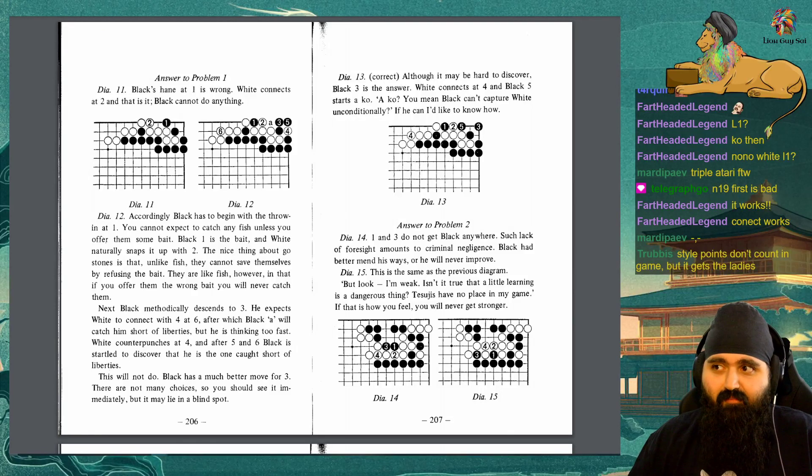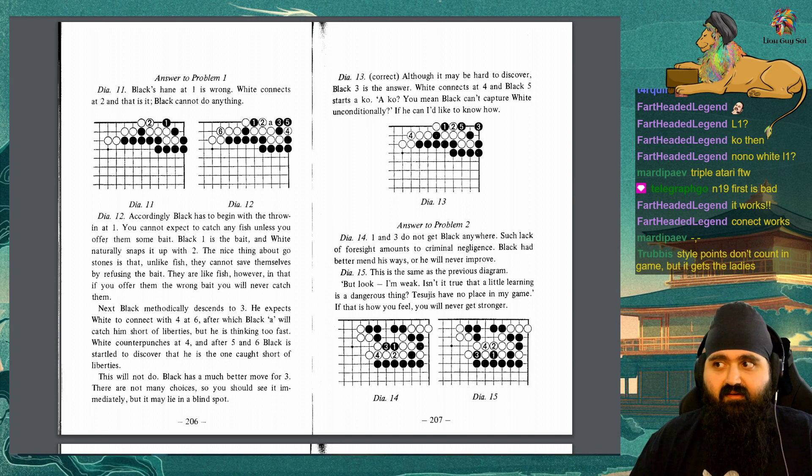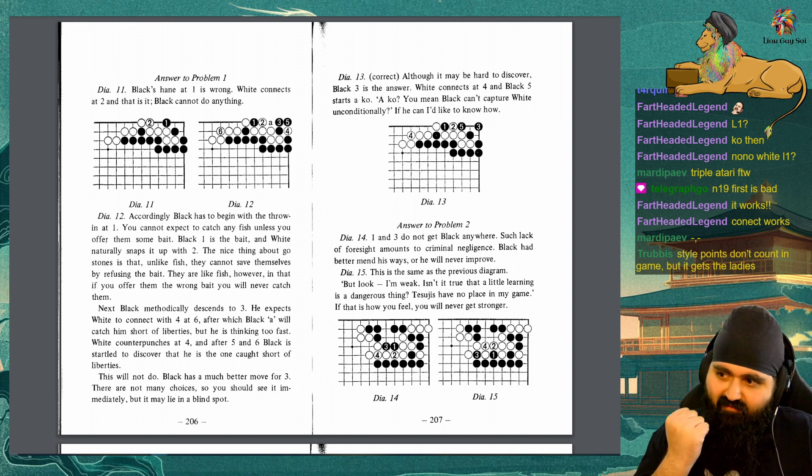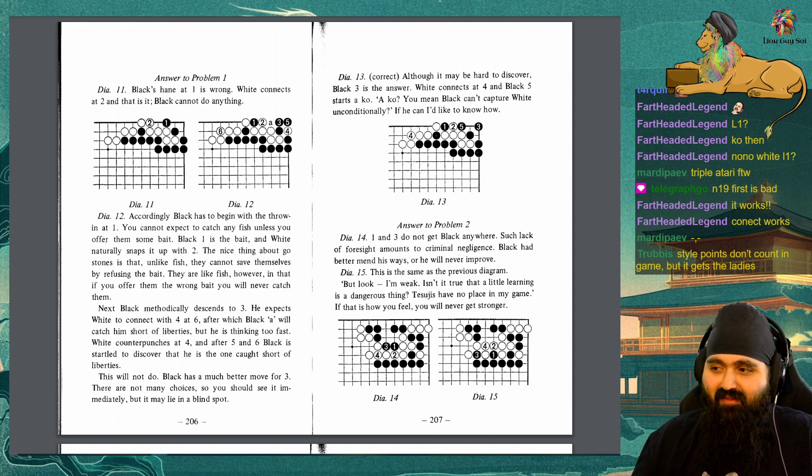Answer to problem 1, Diagram 11: Black's hane at 1 is wrong. White connects at 2, and that is it. Black cannot do anything. Diagram 12: Accordingly, black has to begin with the throw in at 1. You cannot expect to catch any fish unless you offer them some bait. Black 1 is the bait, and white naturally snaps it up with 2. The nice thing about ghost stones is that, unlike fish, they cannot save themselves by refusing the bait. They are like fish however, in that if you offer them the wrong bait, you will never catch them. Next, black methodically descends to 3. He expects white to connect with 4 and 6, after which black A will catch him short of liberties, but he is thinking too fast. White counterpunches at 4, and after 5 and 6, black is startled to discover that he is the one caught short of liberties. This will not do. Black has a much better move for 3. There are not many choices, so you should see it immediately. But it may lie in a blind spot.